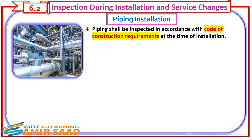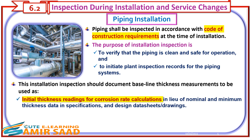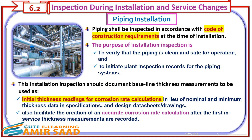Inspection during installation and service changes: Piping shall be inspected in accordance with Code of Construction requirements at the time of installation. The purpose of installation inspection is to verify that the piping is clean and safe for operation, and to initiate plant inspection records for the piping systems. This installation inspection should document baseline thickness measurements to be used as initial thickness readings for corrosion rate calculations, in lieu of nominal and minimum thickness data in specifications, design datasheets, and drawings.